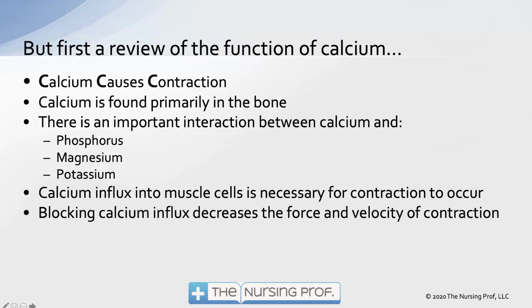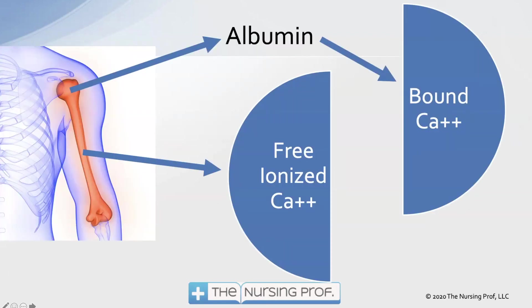Calcium influx into the muscle cells is necessary for contraction to occur. Blocking calcium influx — not blocking all of it, but some — means the force and velocity of contraction will be decreased. There are two different types of calcium to keep in mind.